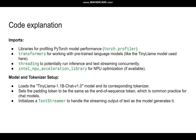For the code explanation, we are using Visual Studio Code and Python, because the NPU acceleration library is available in Python. Libraries imported include: a profiling library for PyTorch models, Transformers for working with pre-trained language models, threading to potentially run inference and text streaming concurrently, and the Intel NPU acceleration library for optimization. This is our main target — to showcase how the NPU can be used for compiling the LLaMA model and to see how inference occurs and how much it utilizes.